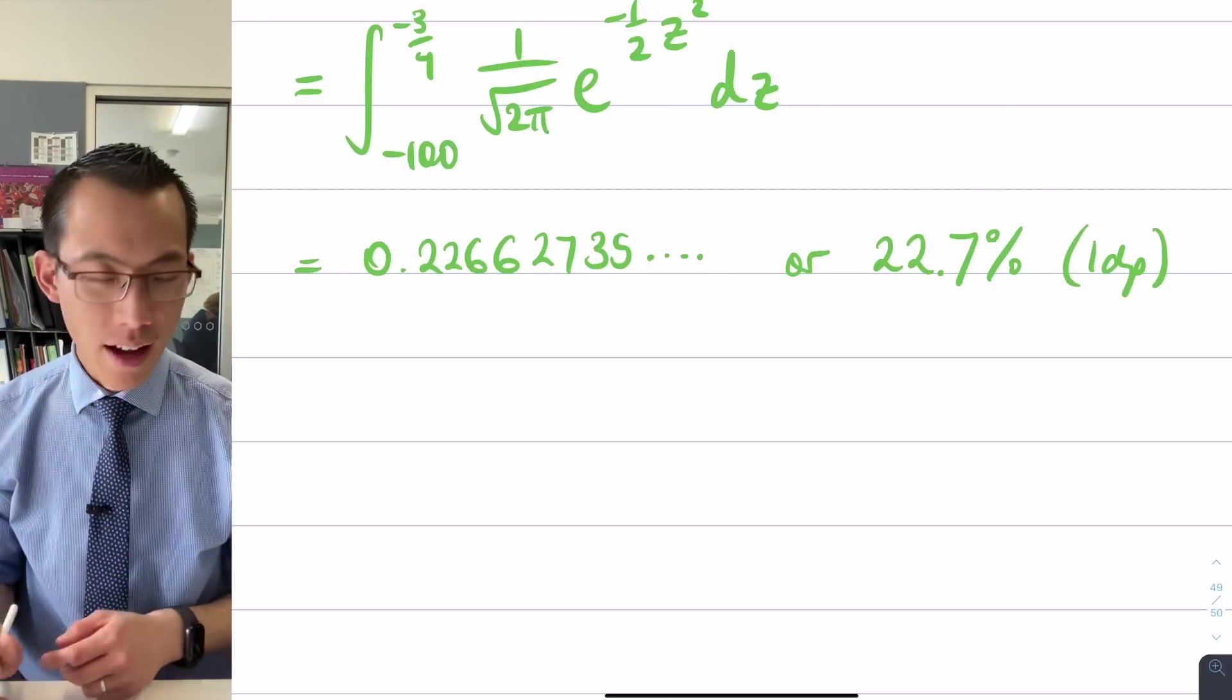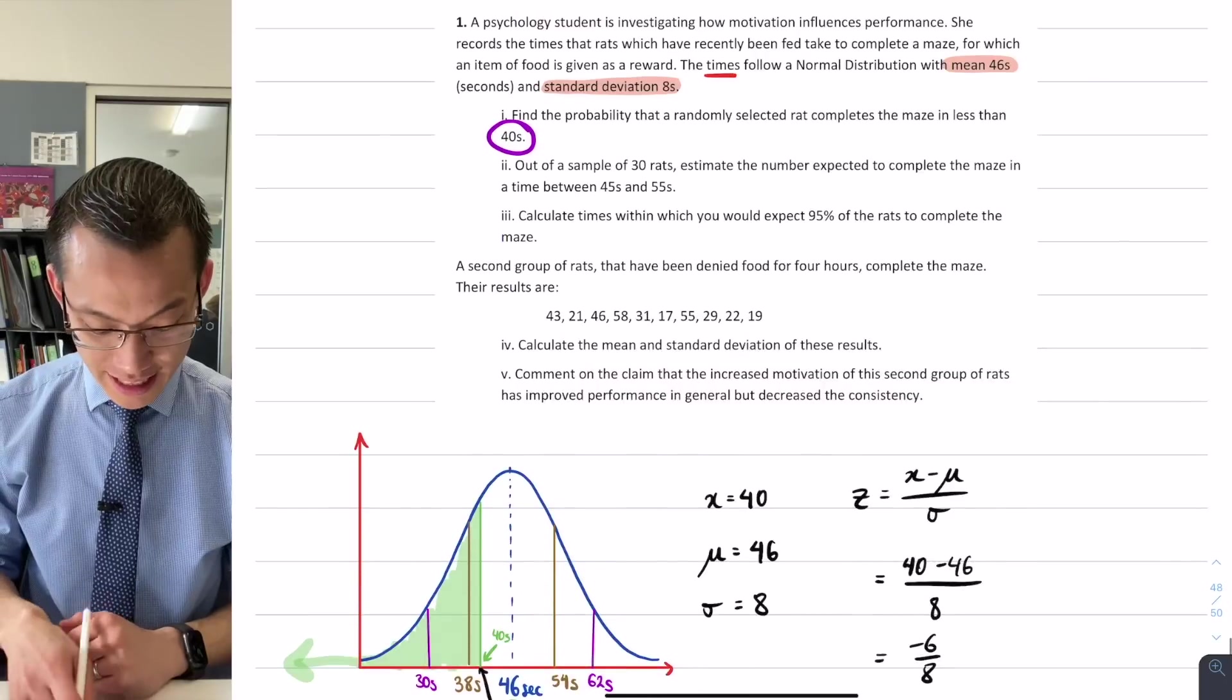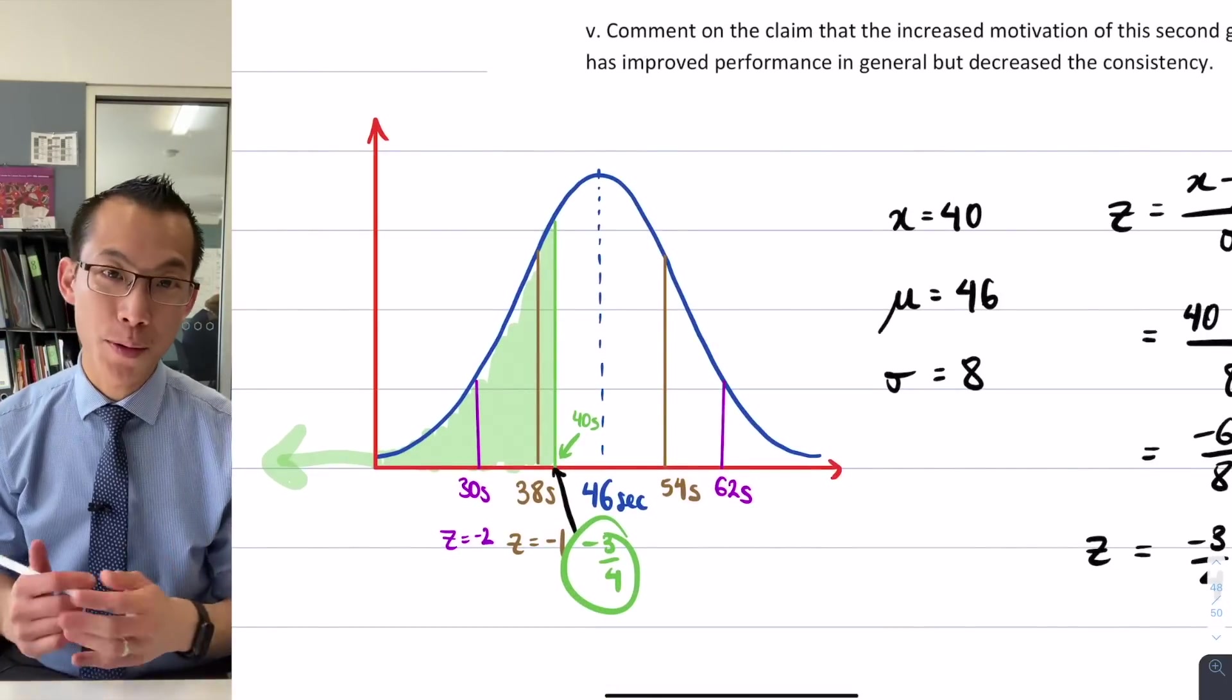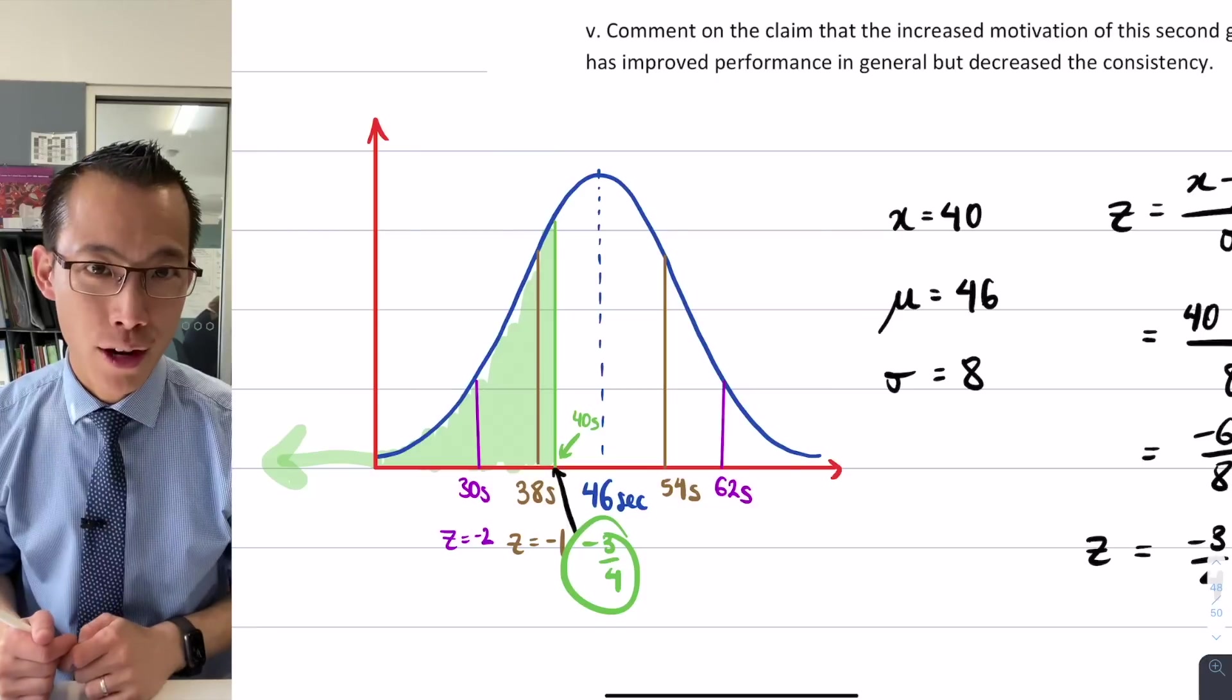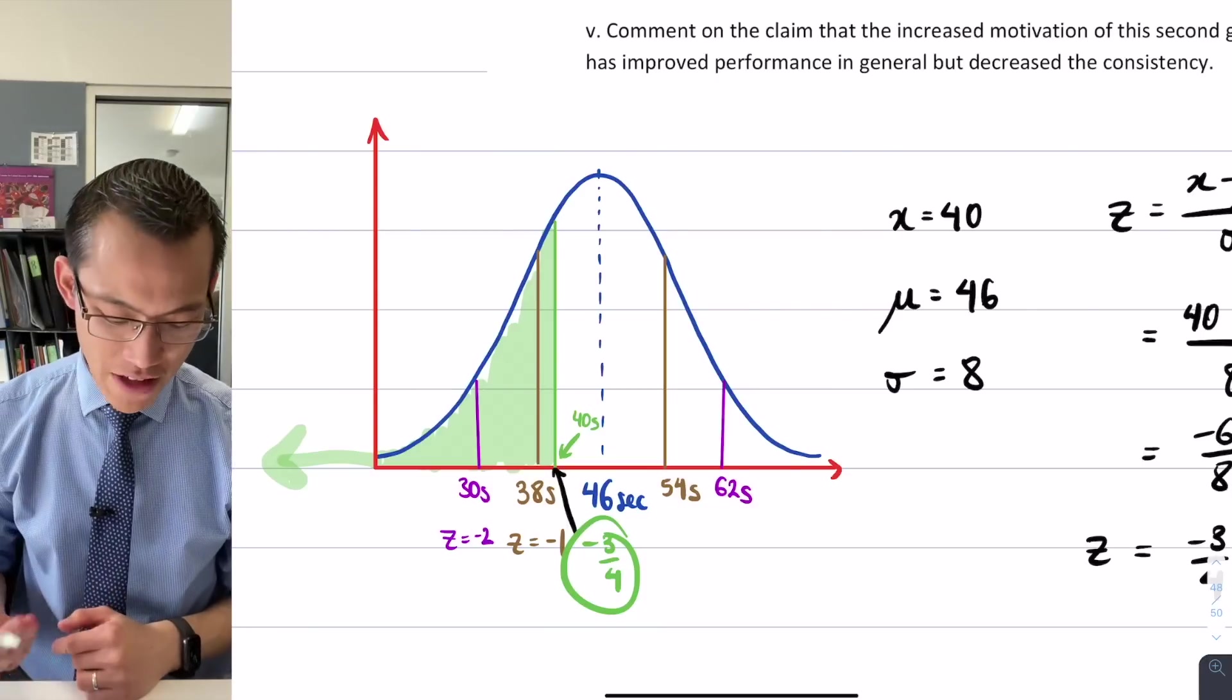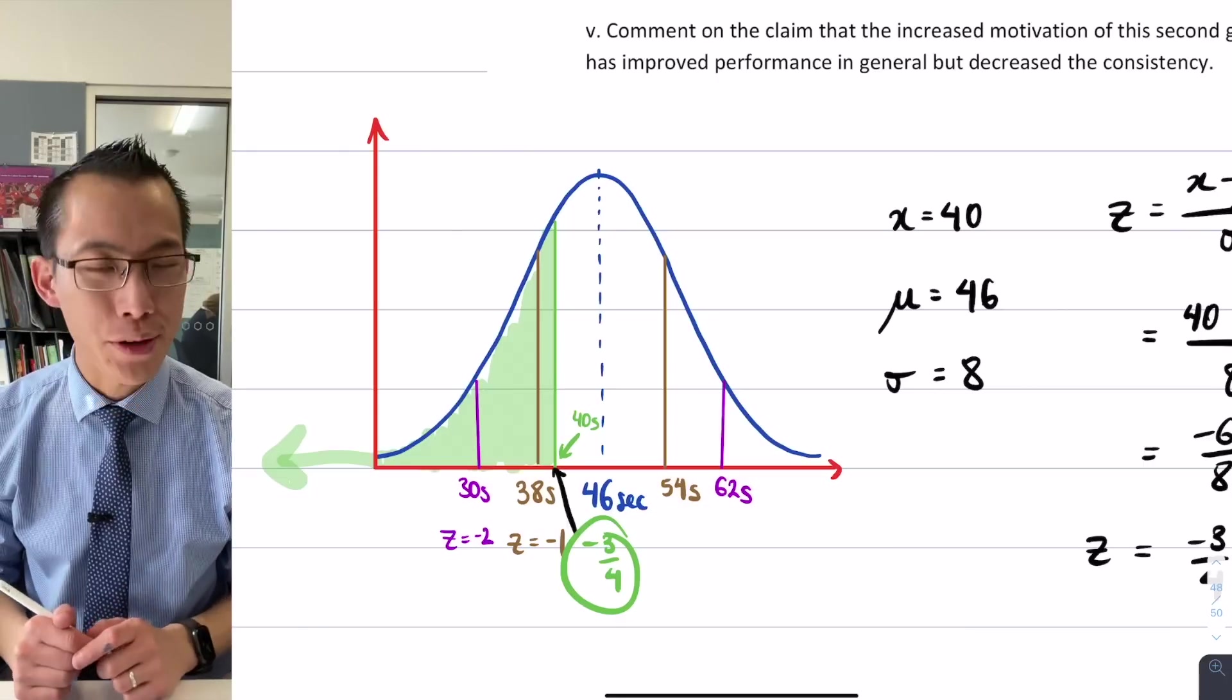So if I had to think about this number, I always love to do a sense check where I possibly can. 22.7%. Does that look like the area under the curve? And I'm pretty happy with that. Remembering that the area underneath the entire probability density function should be 100%. That looks roughly like a quarter to me. My graph is not precise, but I'm pretty happy with that.